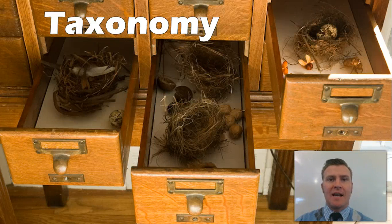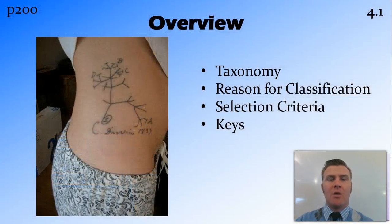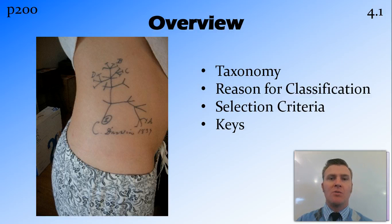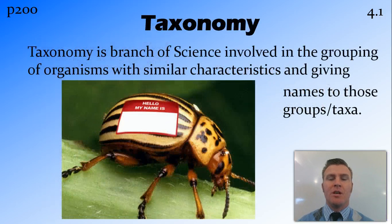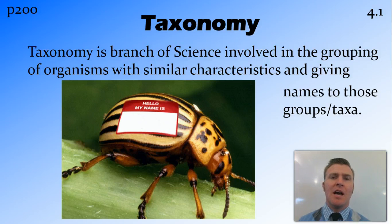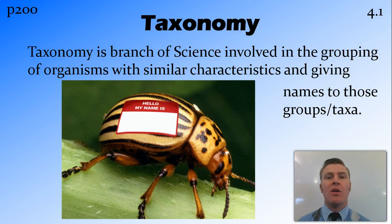In this video we're going to look at taxonomy. We're going to cover what taxonomy is, the reason for classifying organisms, selection criteria for classification, as well as keys as a tool to classifying organisms. So firstly, what is taxonomy? Taxonomy is a branch of science involved in classifying things into groups and naming those groups as well as the organisms within the groups. Those groups that things are classified into are referred to as taxa, so taxonomy being the study of groups or taxa.